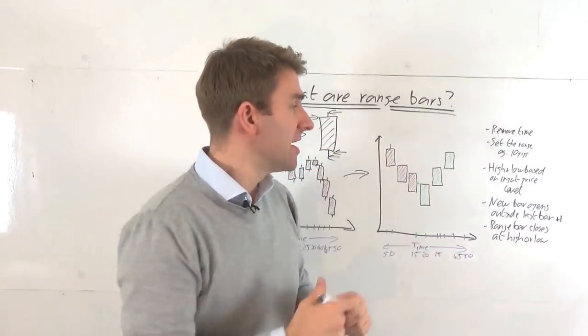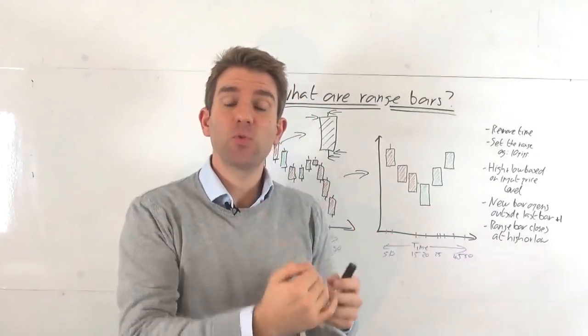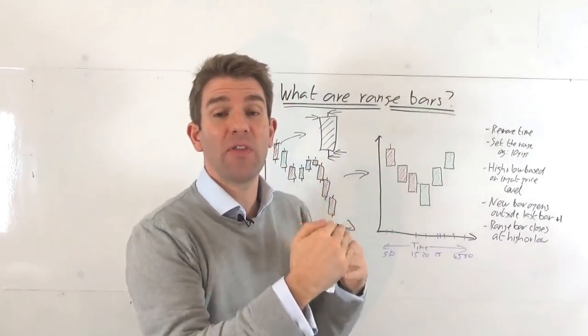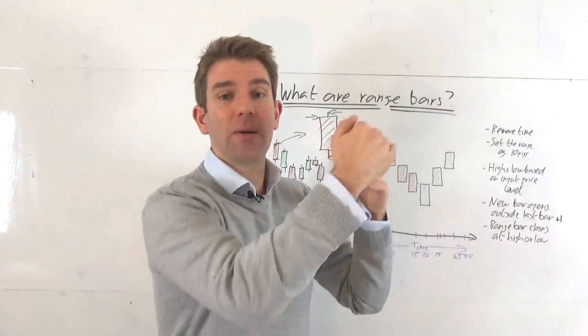The range bar also by the very nature, you can probably work this out now yourselves, is that because the range in this example is 10 pips, it's always going to close at the high or low. And you can see why, because it won't close the bar, it's not a timestamp. It's when it gets to 10 pips. So it's going to either be down 10 pips or up 10 pips.